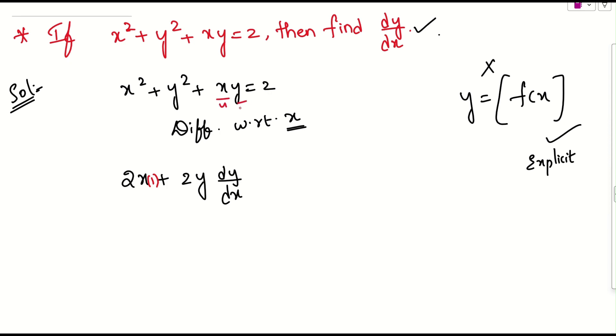u is one function. Here, v is one function. This is a product of two functions. I will be applying uv formula here. What is uv? First term derivative into second term as it is plus first term as it is into second term derivative. What is the constant derivative? Which will be 0 alone.